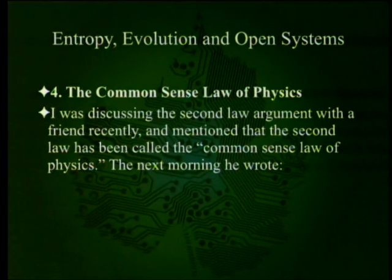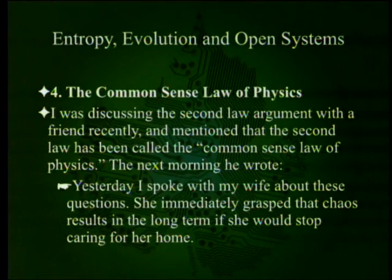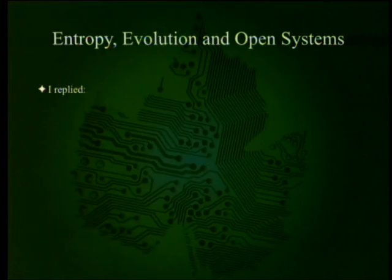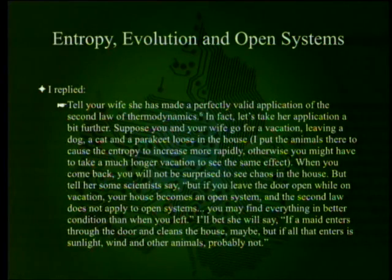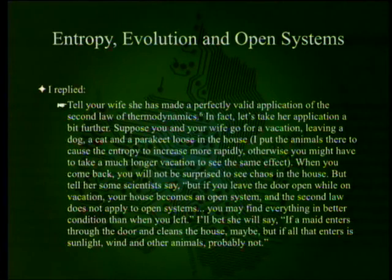Section four: the common sense law of physics. I was discussing the second law argument with a friend recently and mentioned that the second law has been called the common sense law of physics. The next morning he wrote: yesterday I spoke with my wife about these questions. She immediately grasped that chaos results in the long term if she would stop caring for her home. I replied: tell your wife she's made a perfectly valid application of the second law of thermodynamics. Suppose you and your wife go for a vacation, leaving a dog, a cat, and a parakeet loose in the house — I put the animals there to cause the entropy to increase more rapidly. Otherwise you might have to take a much longer vacation to see the same effect. When you come back, you will not be surprised to see chaos in the house.